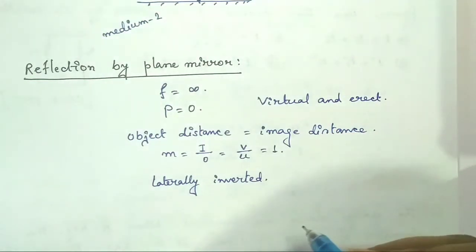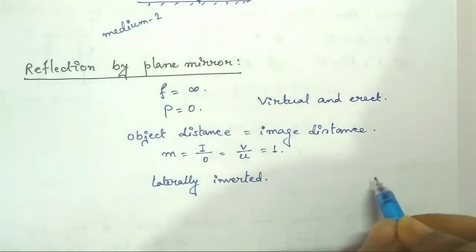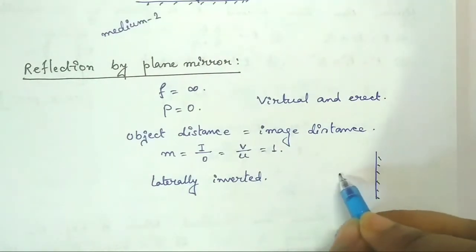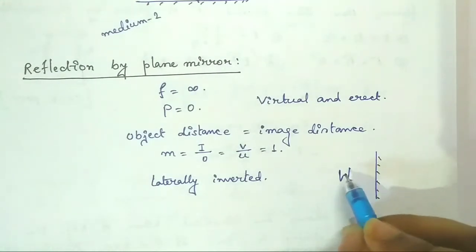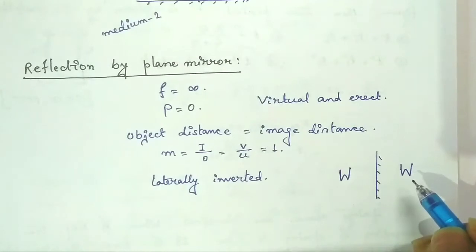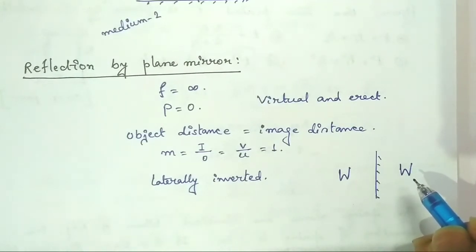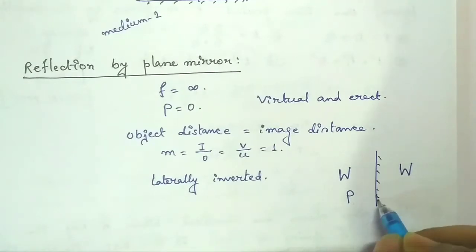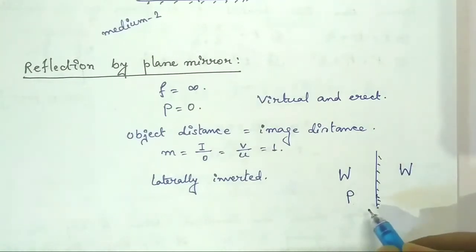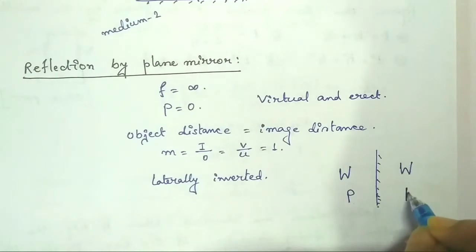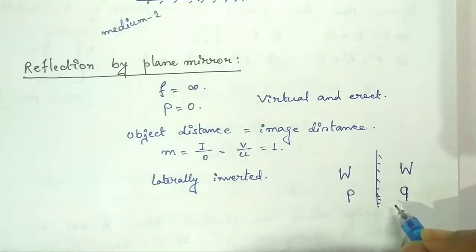Lateral inversion means: suppose this is a mirror and the object is the letter W — then its image will look like W reversed. If we write the letter T or P as the object, then the image will be laterally flipped, and from this example you can clearly understand lateral inversion.